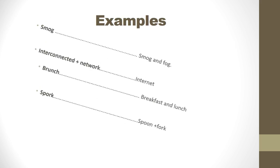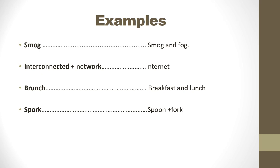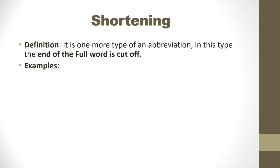Here are the examples of portmanteau. Smog is the blend of smoke and fog. Internet is interconnected and network. Brunch is breakfast and lunch. And spork is spoon and fork — things we use in eating.